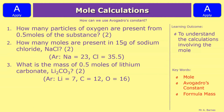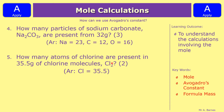Now let's look at a few practice questions. Question 1: how many particles of oxygen are present from 0.5 moles of the substance? Question 2: how many moles are present in 15 grams of sodium chloride NaCl? — atomic masses: sodium = 23, chlorine = 35.5. Question 3: what is the mass of 0.5 moles of lithium carbonate Li₂CO₃? Question 4: how many particles of sodium carbonate Na₂CO₃ are present from 32 grams? — worth 3 marks. Question 5: how many atoms of chlorine are present in 35.5 grams of chlorine molecules Cl₂?